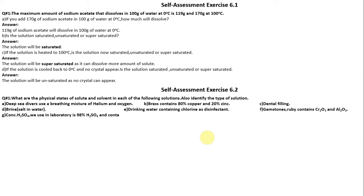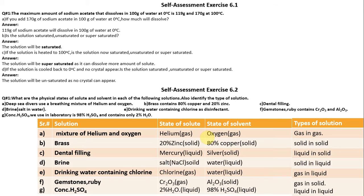(g) Concentrated H2SO4 used in laboratory is 98% H2SO4 and contains only 2% water. For part (a), mixture of helium and oxygen: helium is the solute in the form of gas and oxygen is the solvent also in the form of gas. The type of solution is gas in gas.